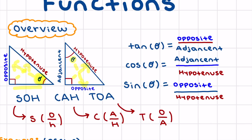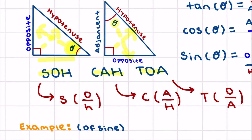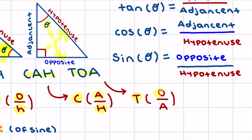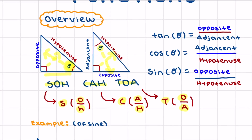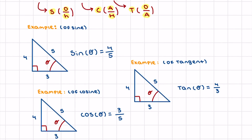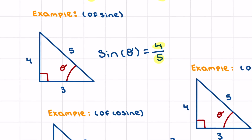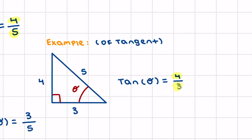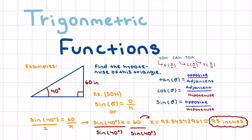To remember all three, there's the mnemonic SOHCAHTOA: S stands for sine — opposite over hypotenuse; C stands for cosine — adjacent over hypotenuse; T stands for tangent — opposite over adjacent. To review our 3-4-5 example: sine theta equals 4 over 5, cosine theta equals 3 over 5, and tangent theta equals 4 over 3.